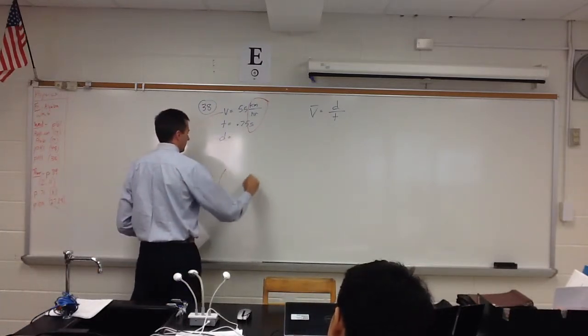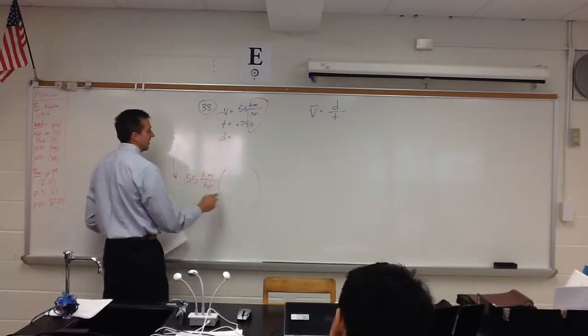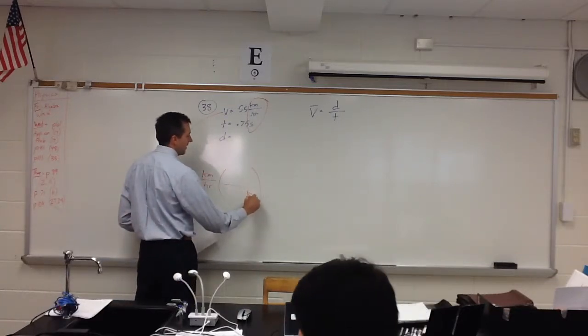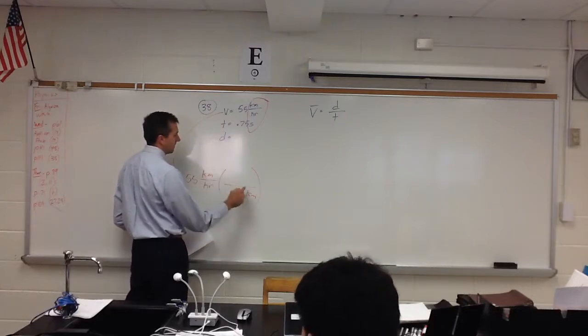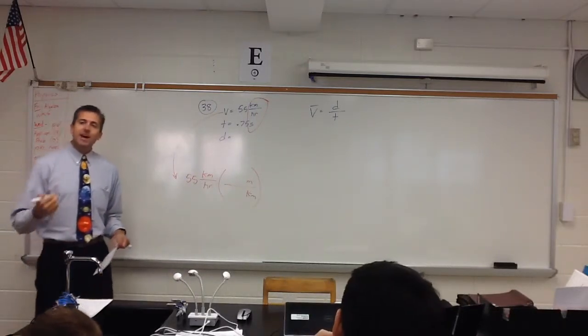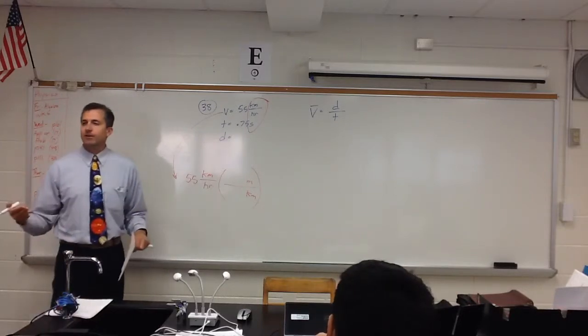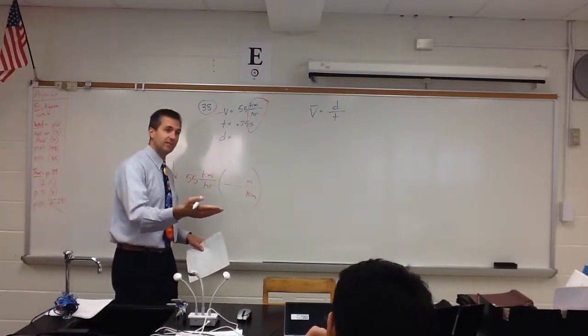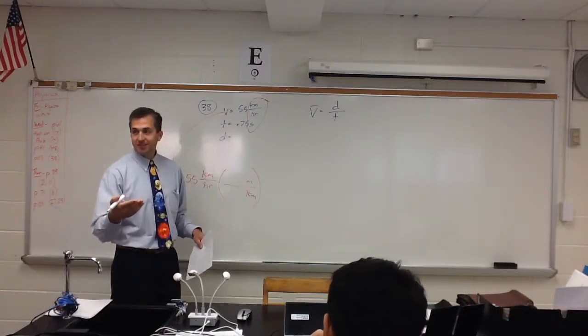So as a little aside, I'm going to take 55 kilometers per hour and I'm going to make it meters per second. That way my units are where they should be. So here's how I'm going to do it. The kilometers are on the top. So to cancel them out, I'm going to put them on the bottom. And I want to get to meters. So I have to ask myself the important question, how many meters are there in a kilometer? Answer? 1,000.